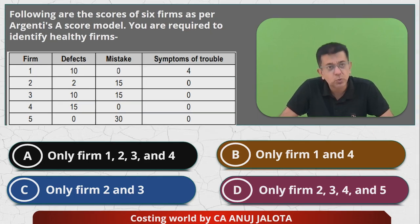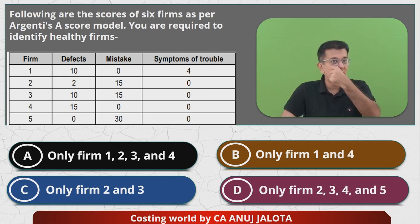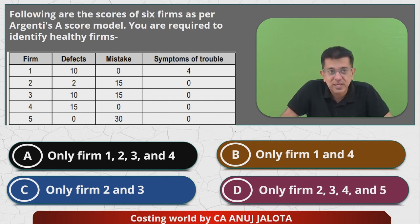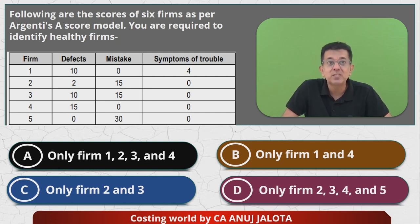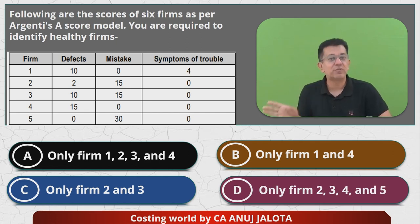As per Argenti's A-score model, it has divided all the things into three groups: defects, mistakes, and symptoms of trouble — which are interrelated. Mistakes if continued for a long time give you symptoms of trouble. Argenti's A-score says that those firms are healthy where the defect score is maximum 10, mistake score is maximum 15, and symptoms of trouble score is maximum zero. The maximum total score that can ever be possible is 25, but it should be 10, 15, and 0.